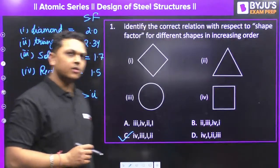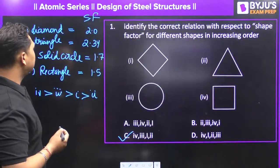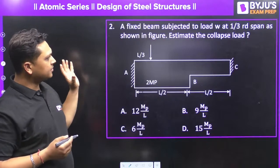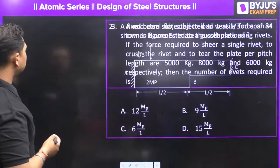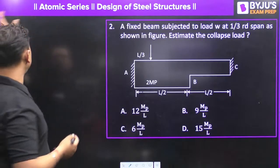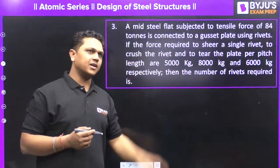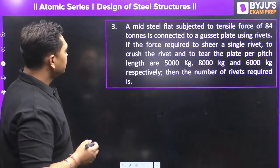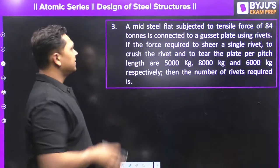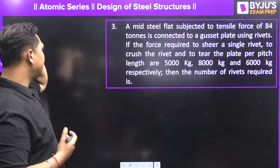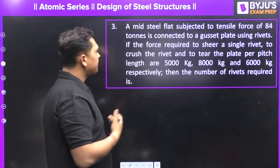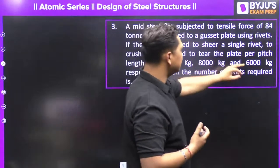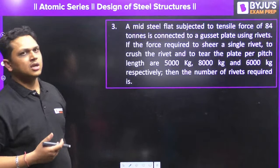Very good. The next question is a little lengthy, so we will do it at the end. Moving on: a mild steel flat is subjected to a tension force of 84 tons and is connected to the gusset plate using rivets. The force required to shear a single rivet, to crush the rivet, and to tear the plate per pitch length is 5000 kg, 8000 kg, and 6000 kg respectively. How many rivets are required?